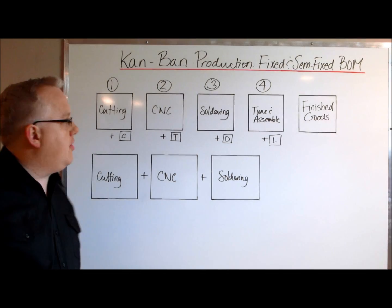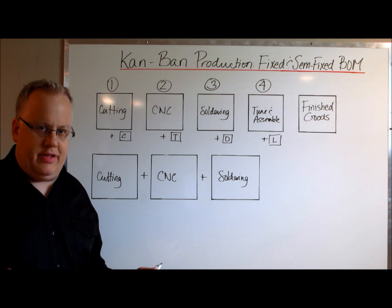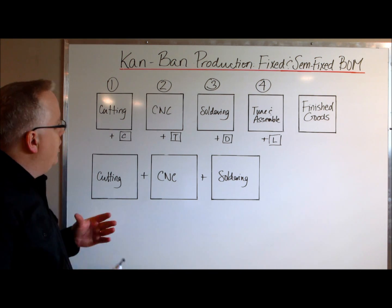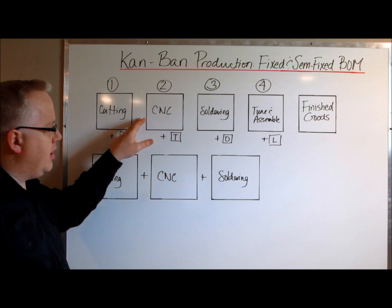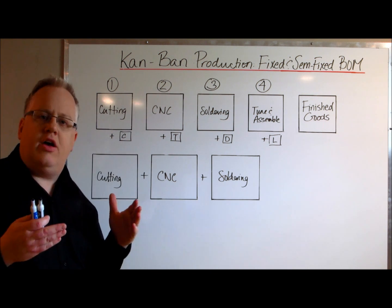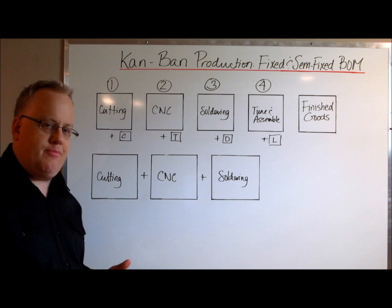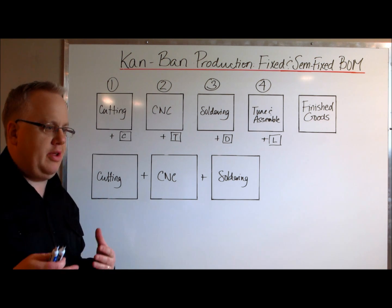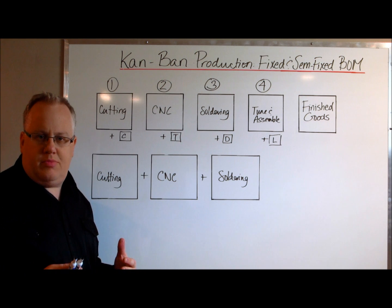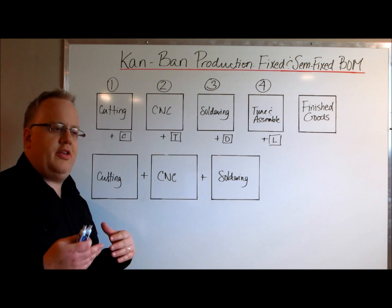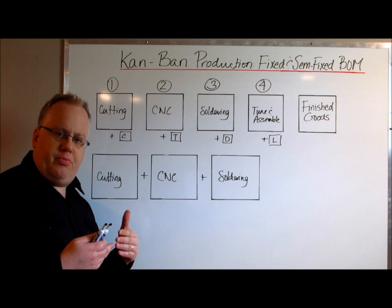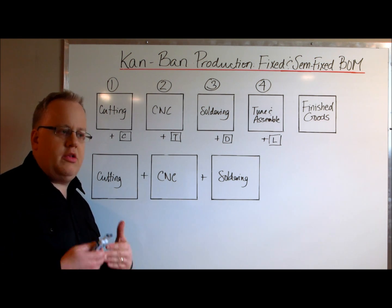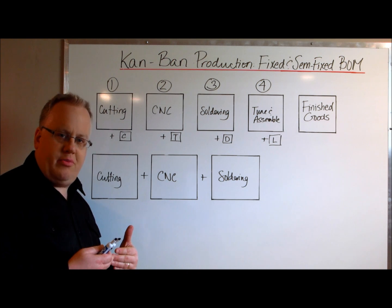Hi guys, Ian Johnson from Driversuccess.com. Today we're going to talk about Kanbans and how a Kanban works in manufacturing. We're going to do this from two points of view. The first is from a company that manufactures from a fixed bill of materials — they make the same product day in, day out. The second is from a company that uses a semi-fixed bill of materials, covering a push-pull strategy where they pre-manufacture most of their finished good and let the customer decide on customizable options.